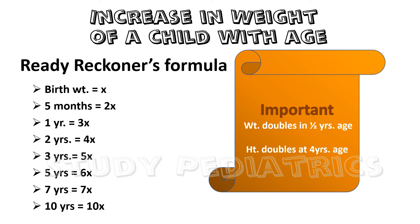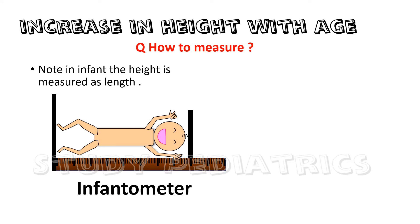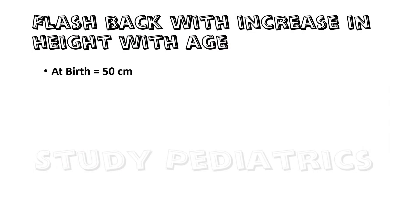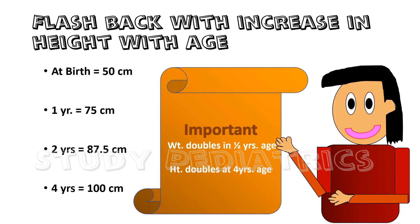Let's move to height. Height can be measured in two ways: if a child is less than 2 years, we use an infantometer; otherwise we use the stadiometer. The height or length at birth is approximately 50 cm; at 1 year it becomes 75 cm (50 + 25 cm); at 2 years it increases to 87.5 cm; and at 4 years it reaches 100 cm. An important point: weight doubles in half a year and height doubles in 4 years.